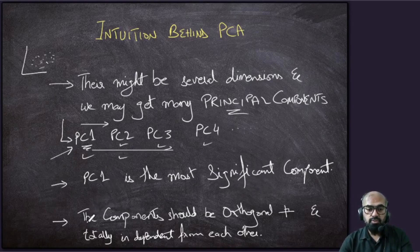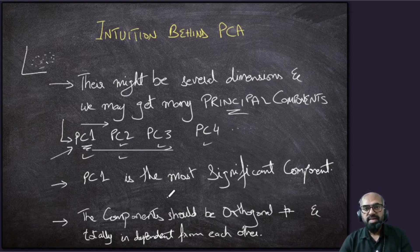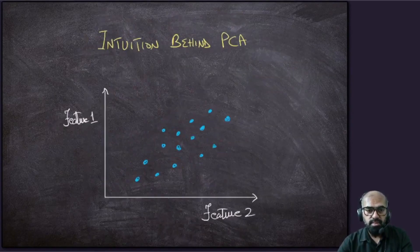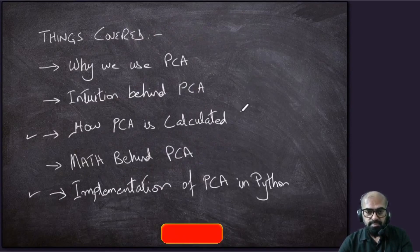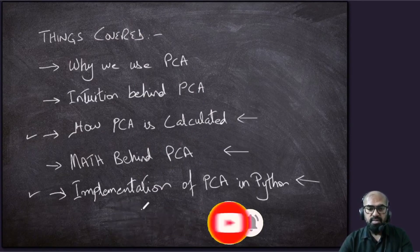Another important point: the components must be orthogonal — that is, 90 degrees to each other and totally independent. There should be no similarity between any of the components. This is how PCA removes similar or highly correlated features from our data. This was the intuition behind PCA. In part two of this lecture, we'll cover how PCA is calculated, the math behind it, and the implementation of PCA in Python.